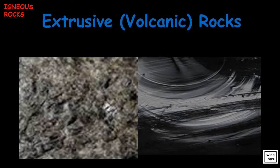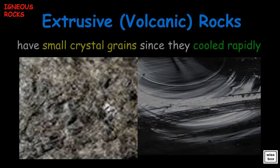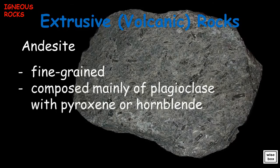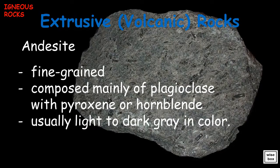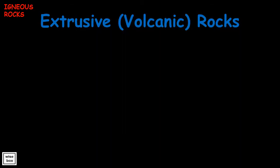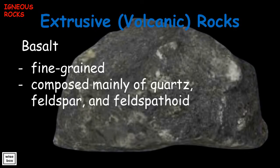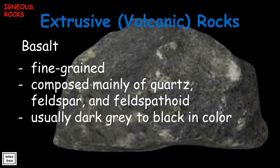Extrusive rocks have small crystals and are fine-grained. One example of an extrusive rock is andesite: it is fine-grained, composed mainly of plagioclase with pyroxene or hornblende, and is usually light to dark gray in color. Another example is basalt: it is fine-grained, composed mainly of quartz, feldspar, and feldspathoid, and is usually dark gray to black in color.